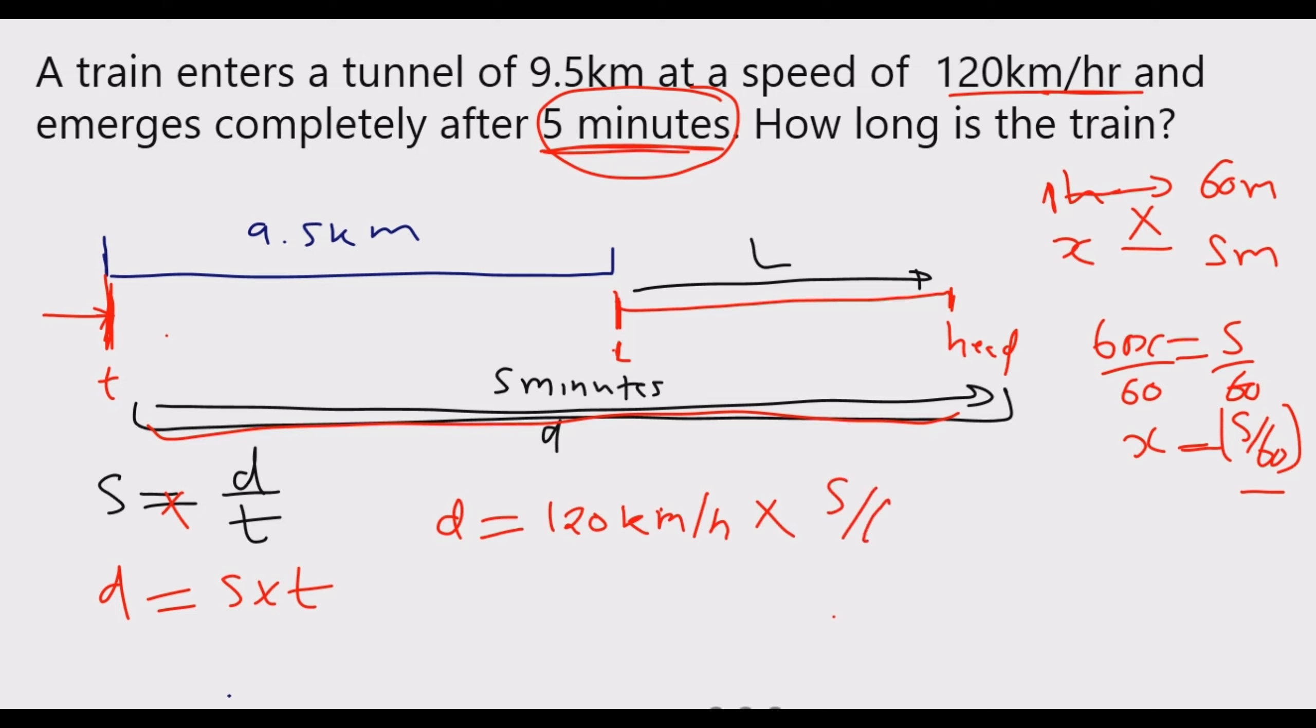This tells me that distance is equal to 120 kilometers per hour, then multiply by the time in hours which is 5 over 60. These are hours, so this hour and this hour cancel. 120 divided by 60 is 2. 2 times 5 is 10. So distance total is 10 kilometers.